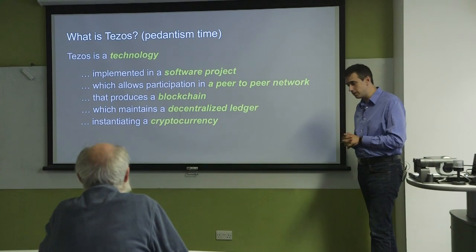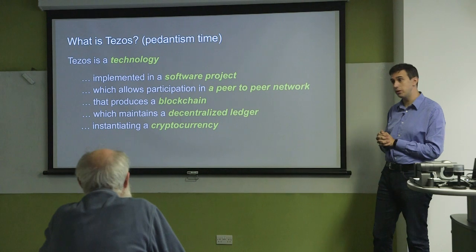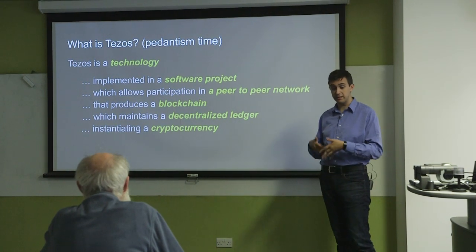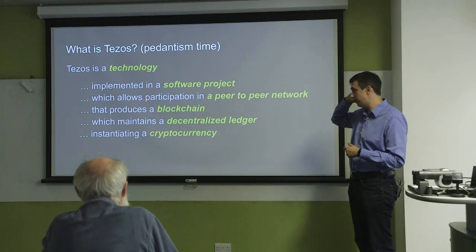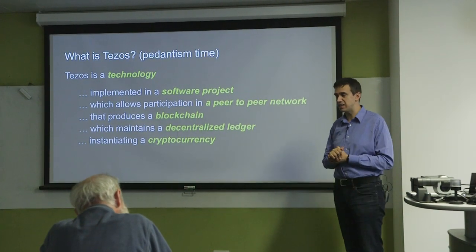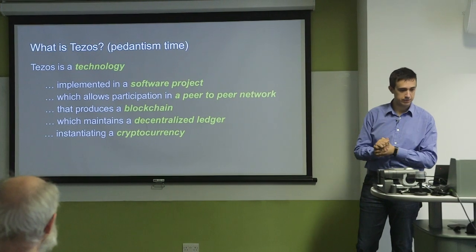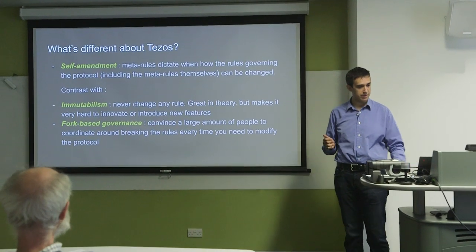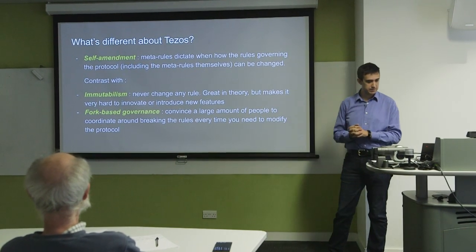If you say Tezos is a blockchain, I won't hold it against you — it's a nice shortcut — but if you want to be rigorous, it's a technology that lets you build a blockchain. A blockchain is used to maintain a decentralized ledger, and that ledger instantiates a cryptocurrency. A cryptocurrency is not a claim on an asset; it's a digital asset that exists by virtue of a ledger being maintained. So that's the lay of the land of what Tezos is. What's different about it? The most important thing is that it has the ability to self-amend.